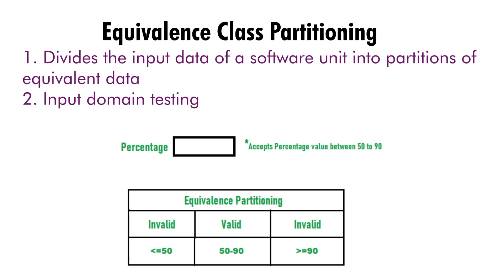We pick one value from each class. Here we have the range 50 to 90, but you can partition it into 50–70 and 70–90 and pick one value from each sub-range. When writing test cases, always start with positive or valid input values. Pick test cases from the valid partitions first, then move to invalid partitions — which are below 50 and above 90. Pick one or two values from each invalid range and you're done.